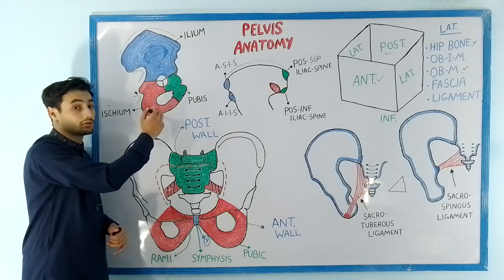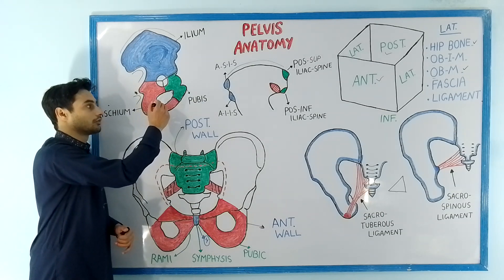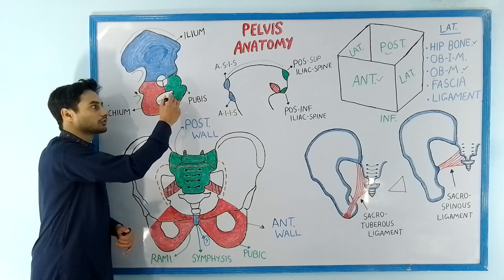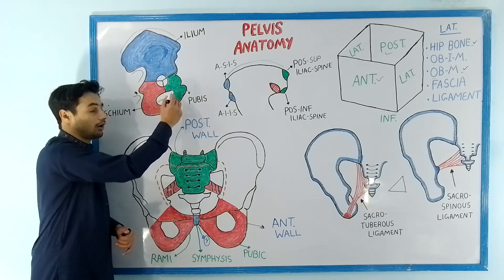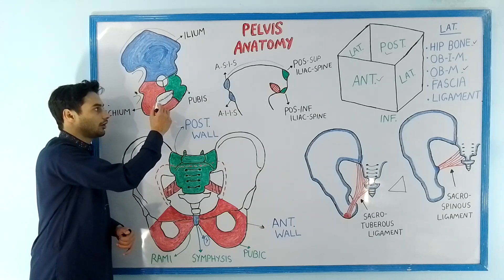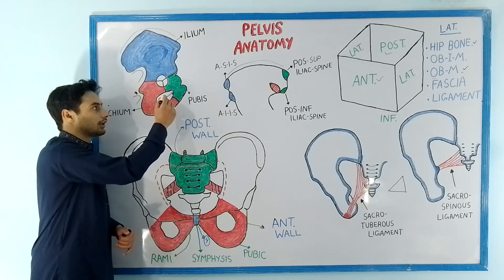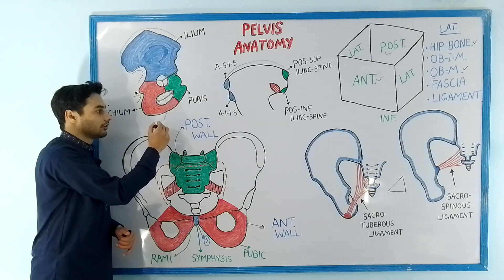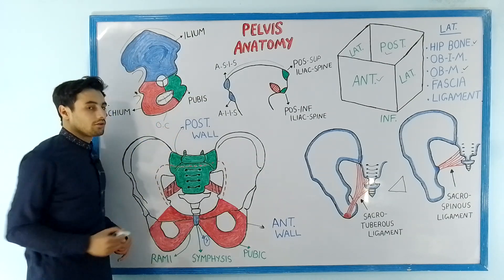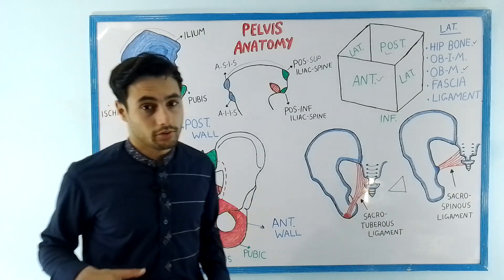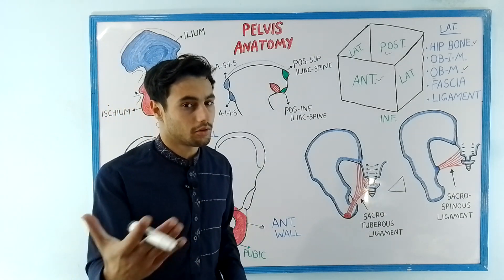The obturator membrane is located here and it almost fills the obturator foramen. By filling this obturator foramen, a canal is formed which is known as the obturator canal. This obturator canal contains the obturator nerves, which pass from the pelvis into the lower limb.